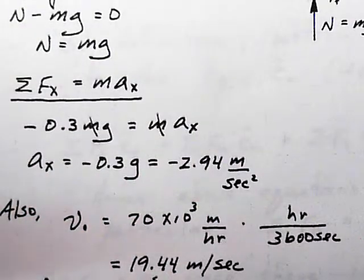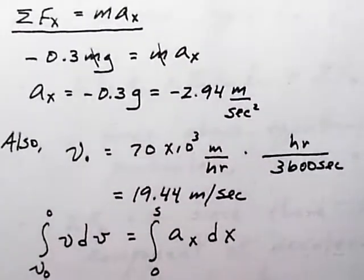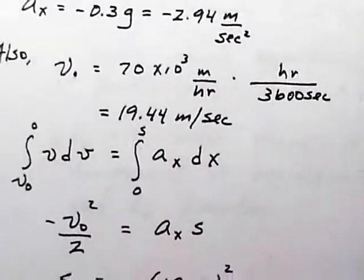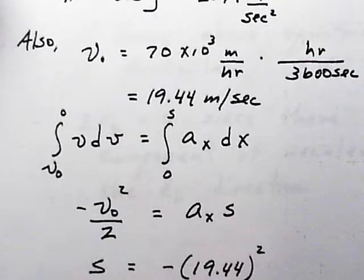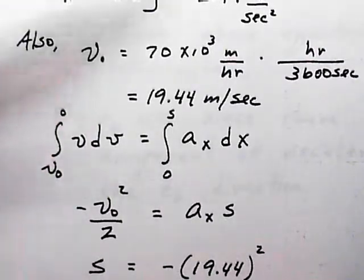Now the question is the minimum stopping distance. We know our acceleration now, so we're going to use a ds equals v dv.